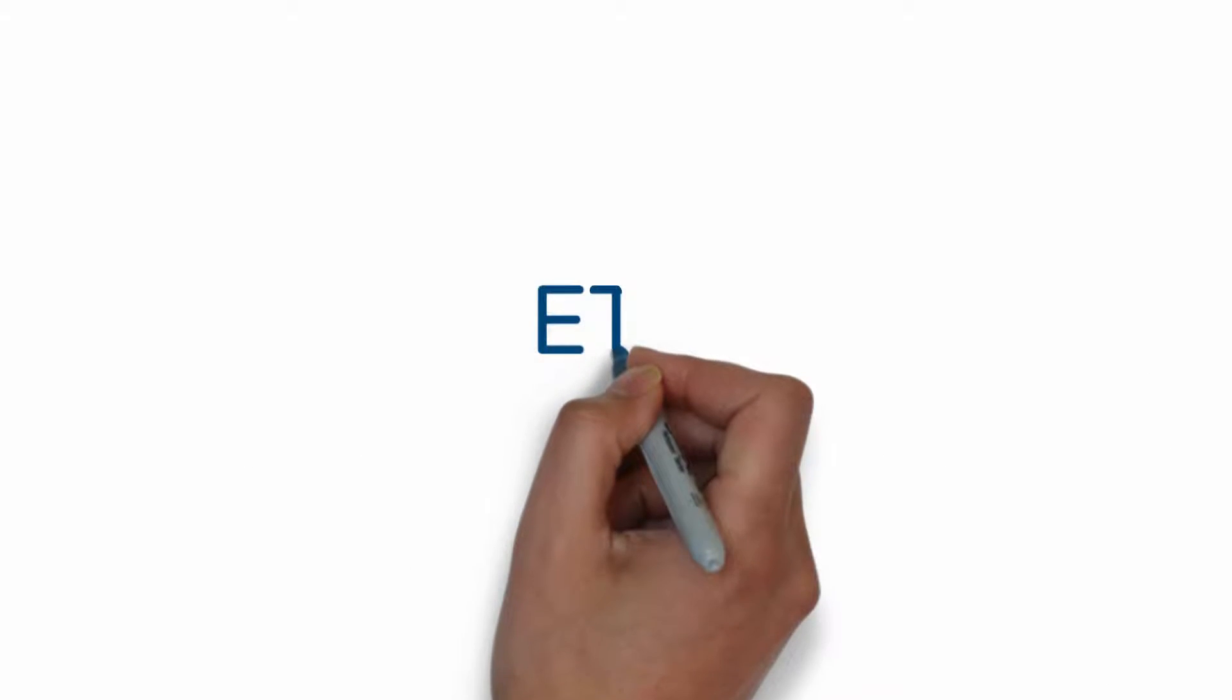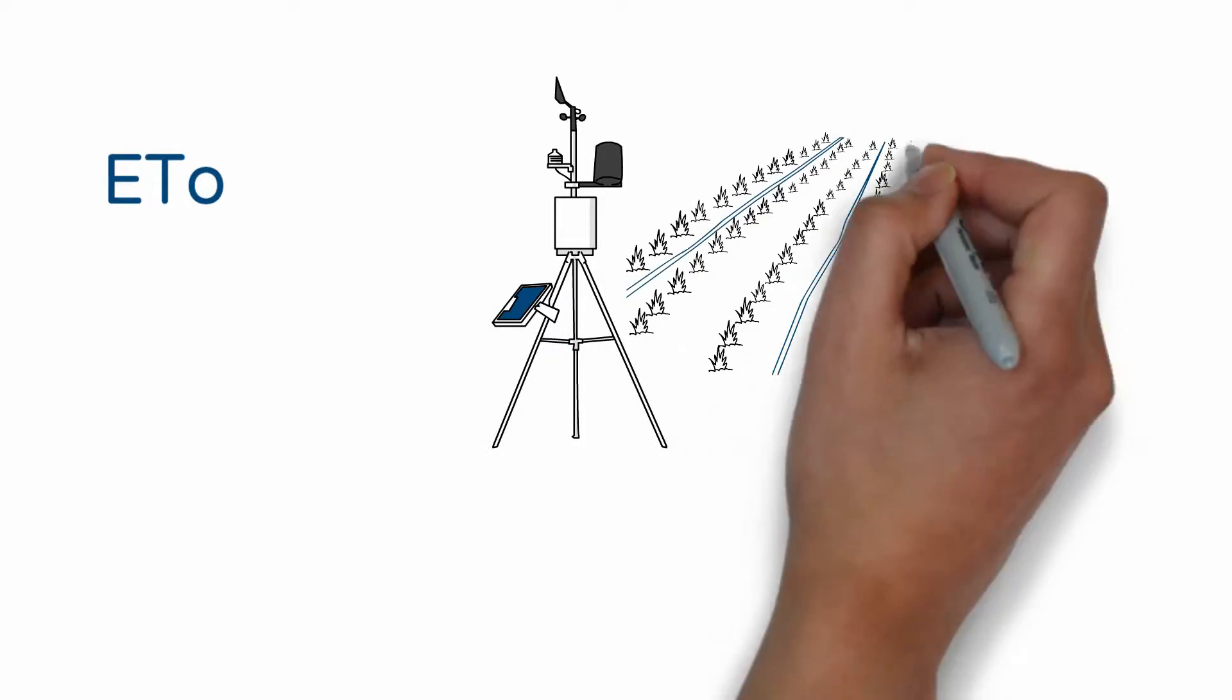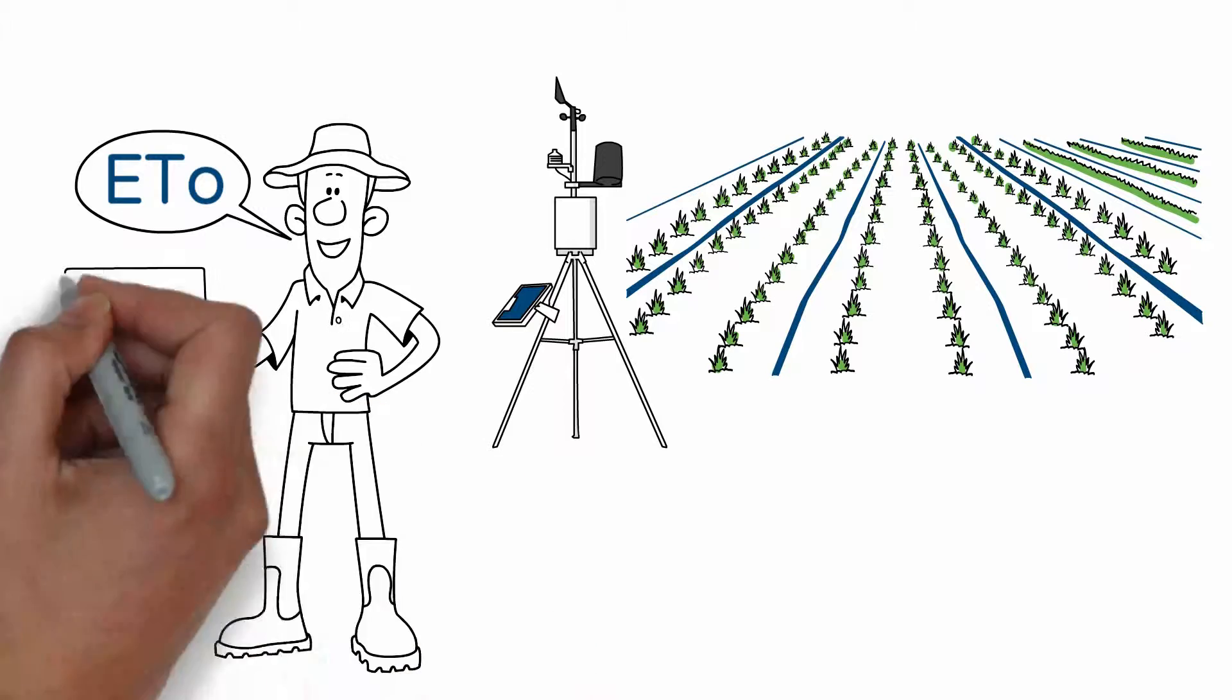And where do you get the ETO values? That's easy too! You can get them by having a weather station on your farm or from one of the local weather stations near you.